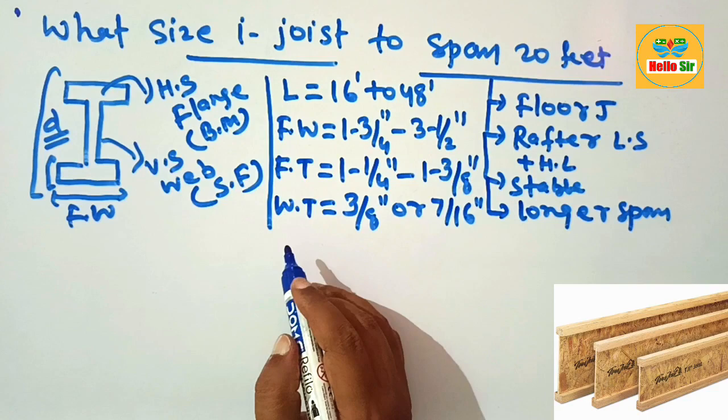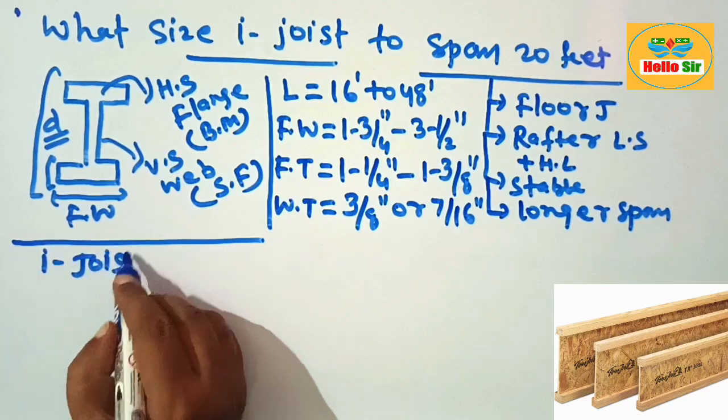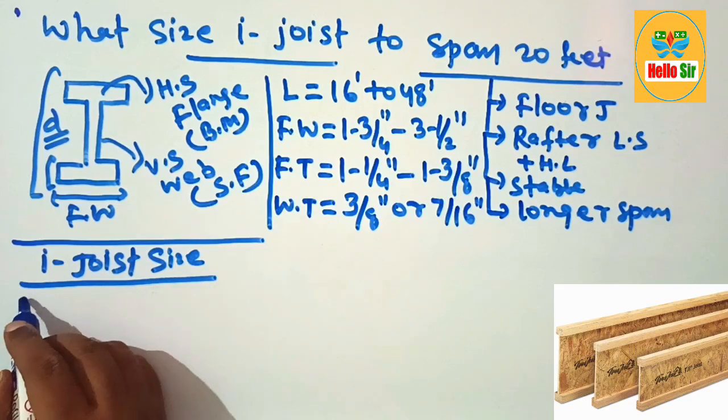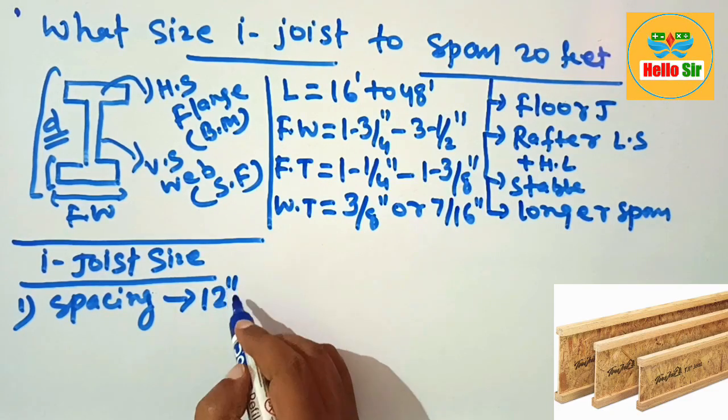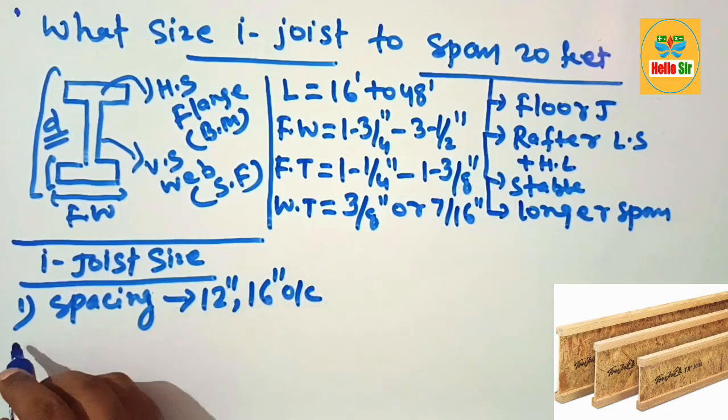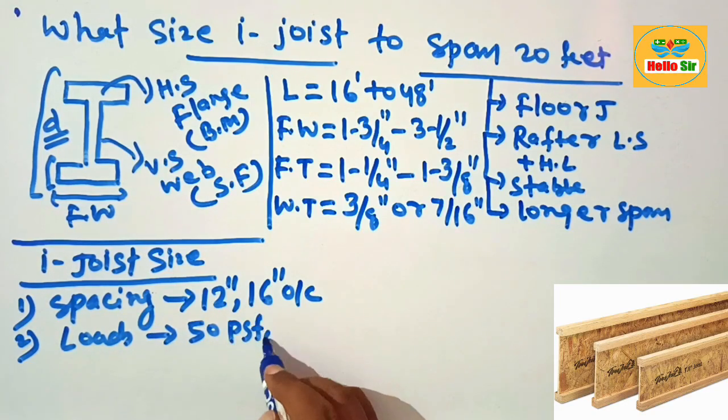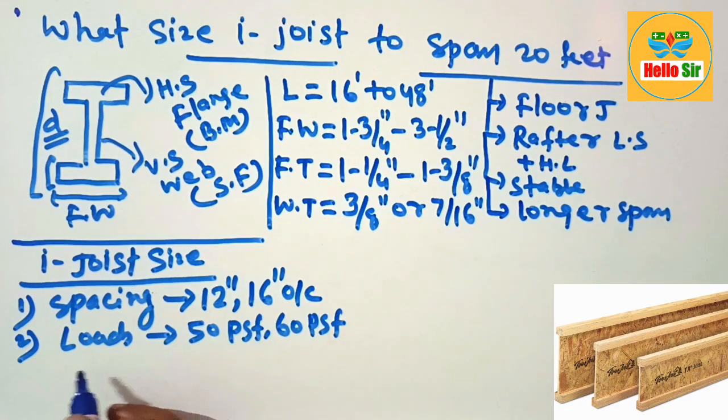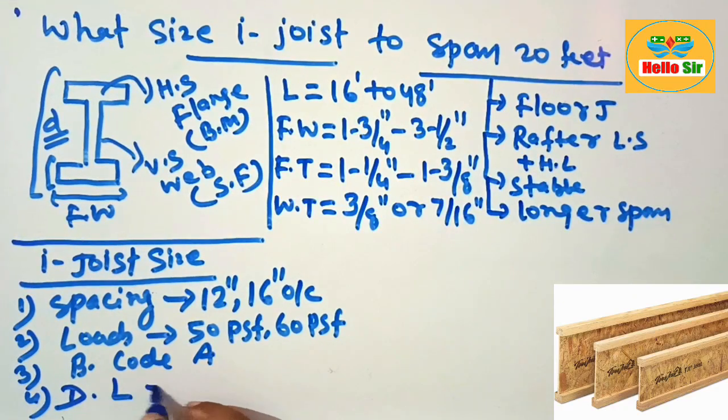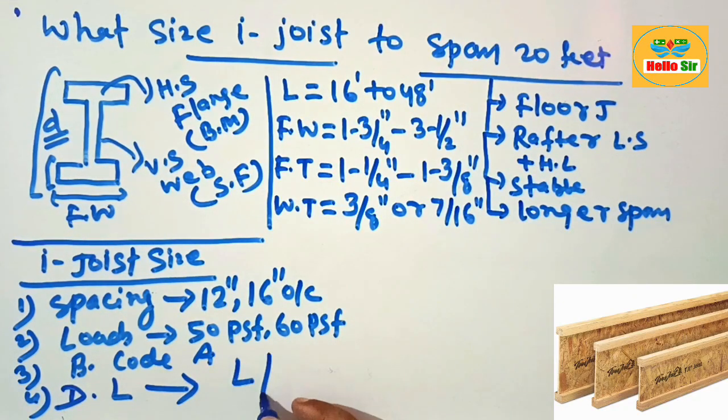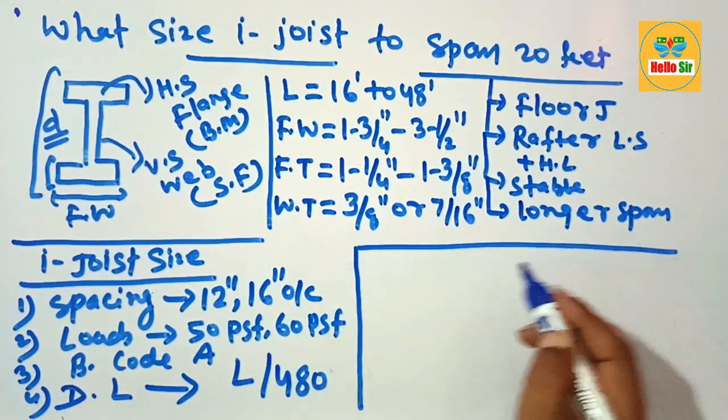What are the factors that decide the I-joist size? There are several factors. The first factor is the spacing between the joists, which should be 12 inches on center or 16 inches on center. The second factor is the load condition, which may be 50 pounds per square foot or 60 pounds per square foot. The third factor is the building code in your area and the deflection limit, which should be L/480. These factors decide the I-joist size required to span 20 feet.